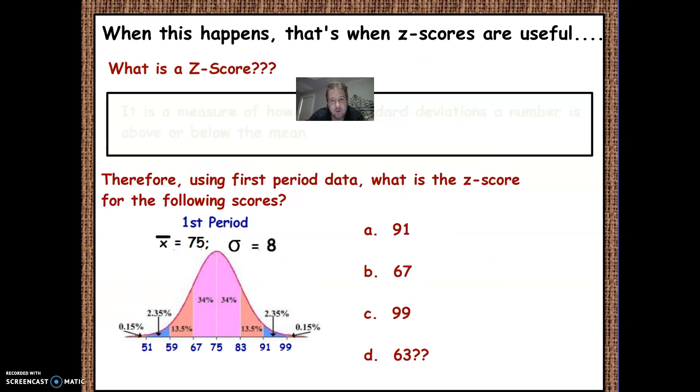A Z score tells you the average amount of deviations that you are away from the center. So the further you are away from the center, clearly the better you did. The further to the right, the further below it, then the worse that you did. Therefore, using the first period, what is the Z score of the following scores?